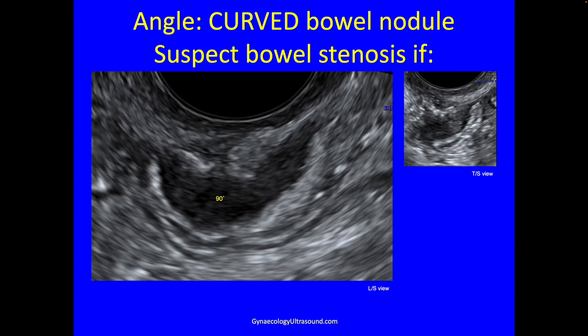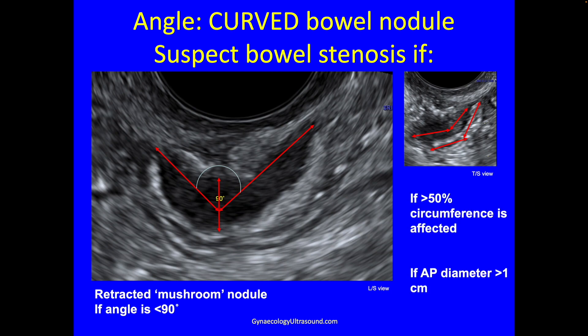When you have a curved bowel nodule you also think about stenosis. This is how you measure the bowel nodule: this is the angle between them, that's the depth, and that's the width. A retracted mushroom nodule — if the angle is less than 90 degrees we're going to think of bowel stenosis, if more than half the bowel circumference is affected, and if the AP diameter is more than one centimetre.